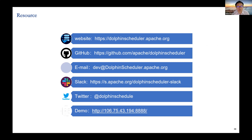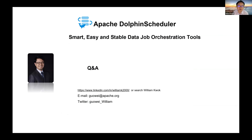Resources are available at dolphinscheduler.apache.org, on GitHub, via the dev mailing list at dev@dolphinscheduler.apache.org, on the Slack channel, and on Twitter. Demos are available — if you want to log in to the demo, ask in the Slack channel. In summary, DolphinScheduler is a smart, easy, and stable data job orchestration tool for everyone. You can contact me on LinkedIn, by email, or follow me on Twitter.